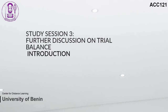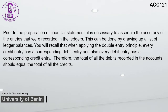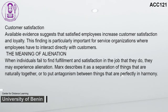Study Session 3: Further Discussion on Trial Balance. Prior to preparation of financial statements, it is necessary to ascertain the accuracy of entries recorded in the ledgers by drawing up a list of ledger balances. When applying the double entry principle, every credit entry has a corresponding debit entry and vice versa. Therefore, the total of all debits recorded should equal the total of all credits. A trial balance is defined as the list of balances extracted from different ledgers primarily to show the arithmetic accuracy of accounting postings. If entries are properly posted and summed up, both sides of the trial balance should be equal.